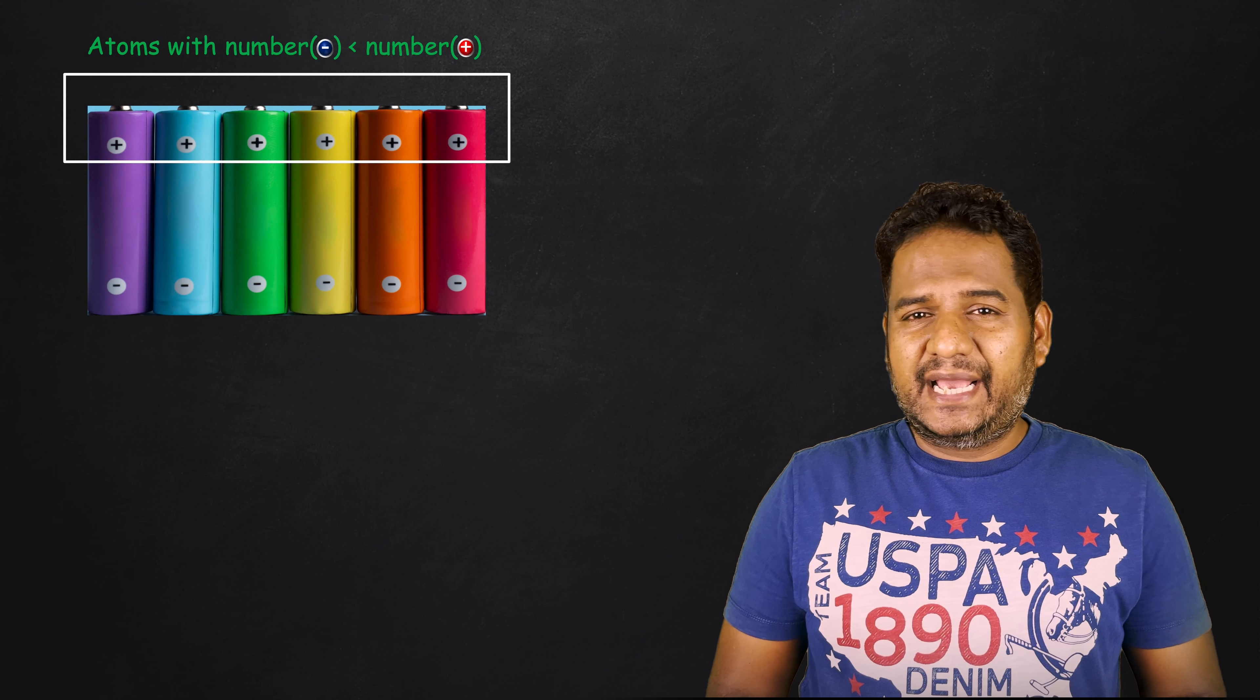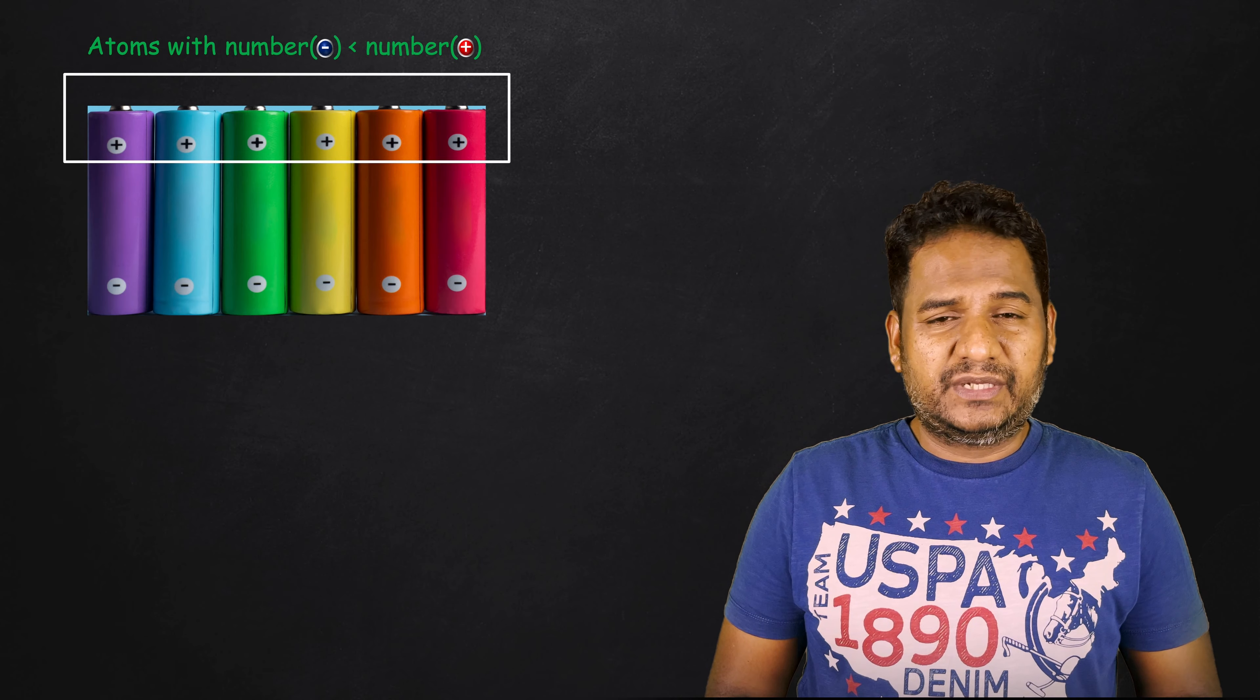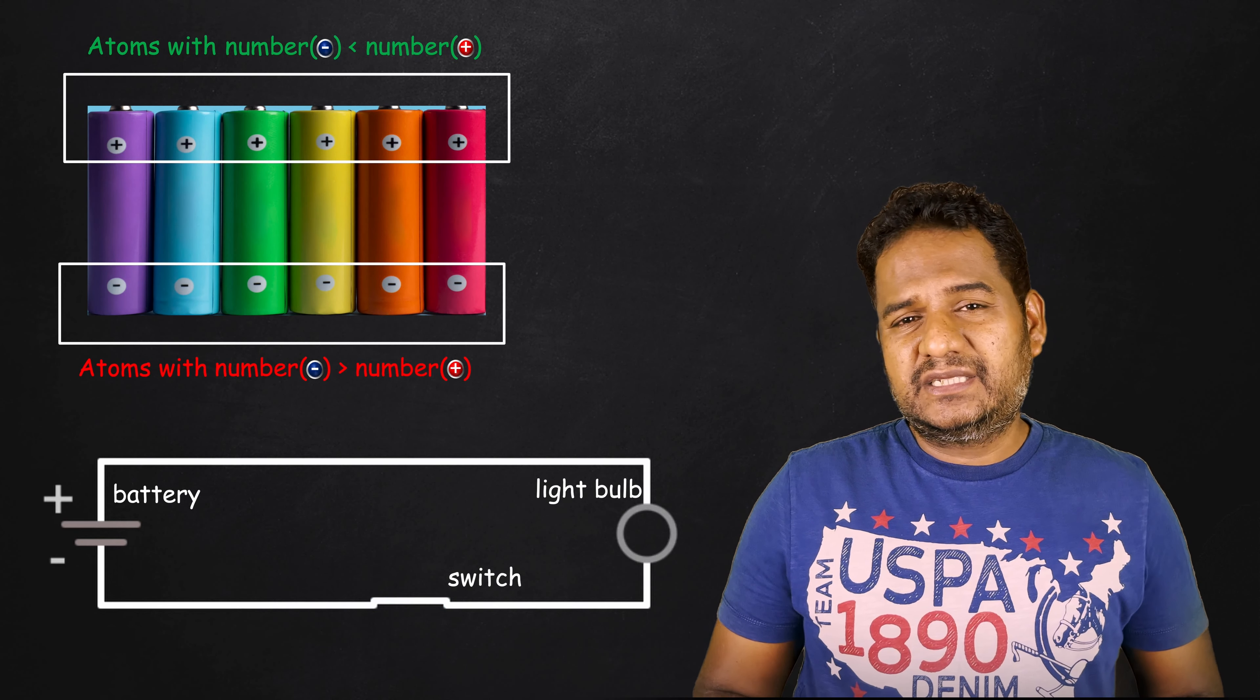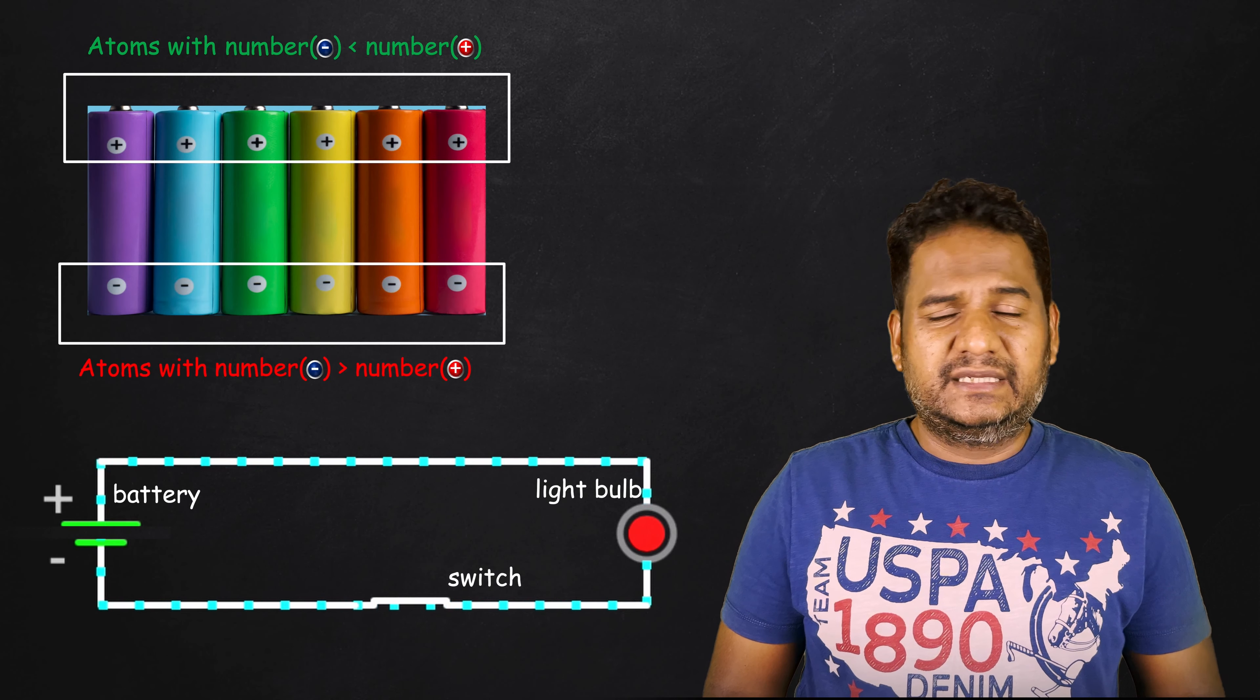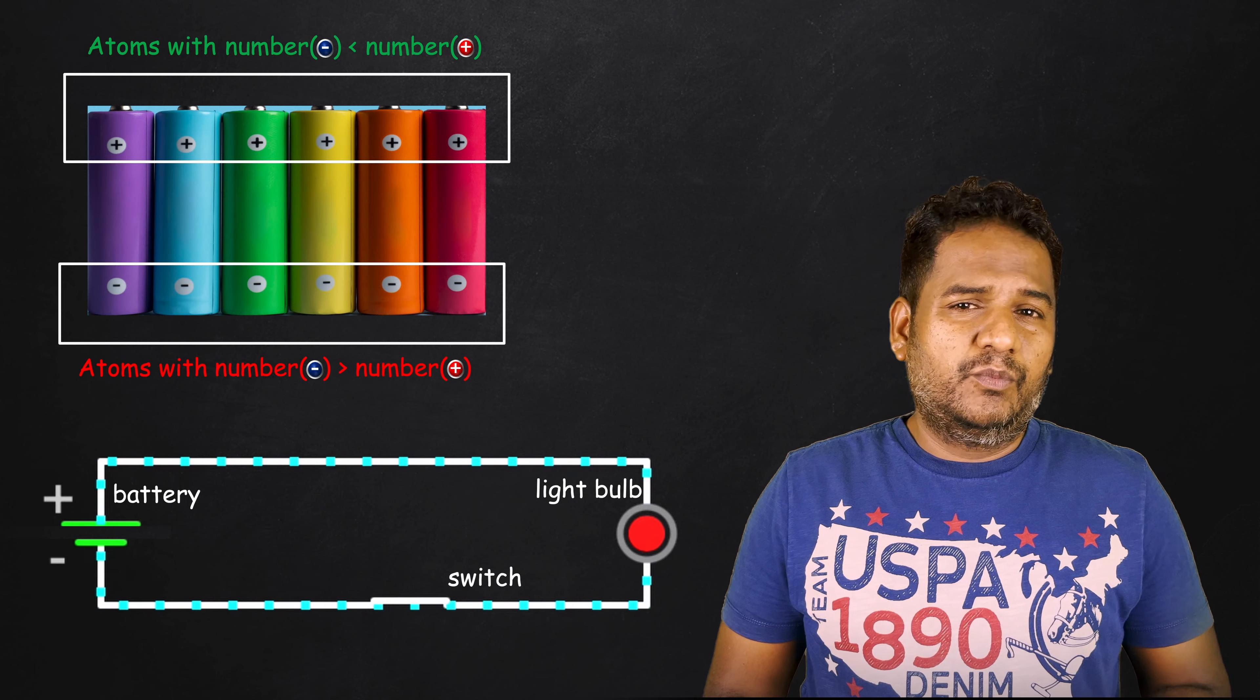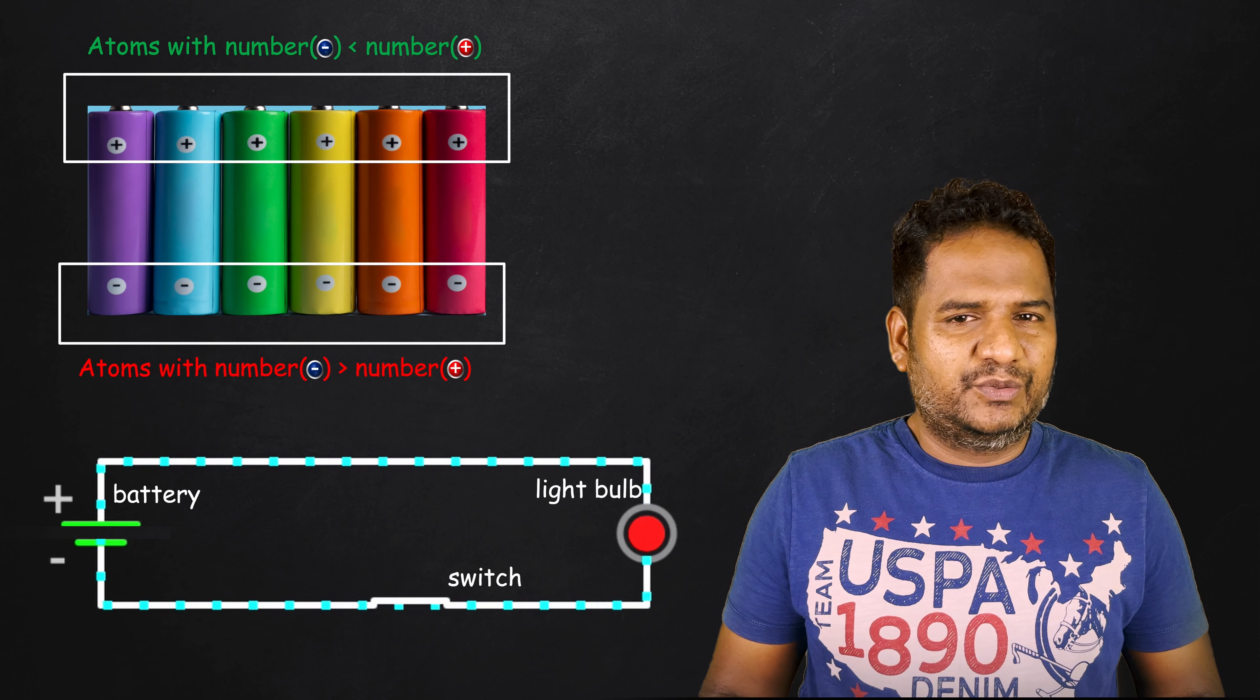In a battery, you can see positive and negative sides. The positive side has atoms with more protons. On the other side, the negative side, each atom exists with more electrons. When these two sides are connected through a conductor material such as copper, as shown in this circuit, the electrons from the negative side move to the positive side because the positive side attracts the negative side.